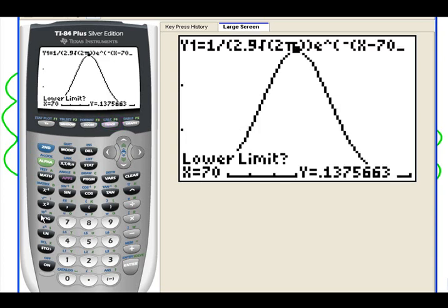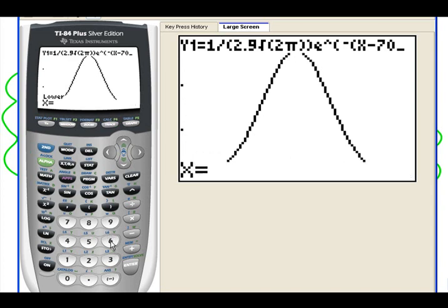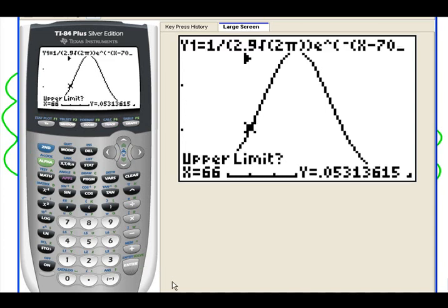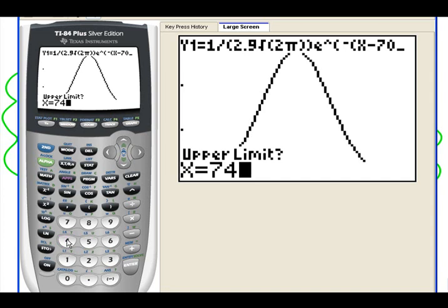It's asking for the lower limit, type 66, and hit enter. Now it's asking for the upper limit, type 74, and hit enter.